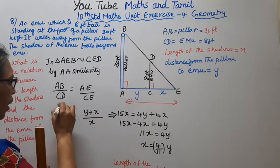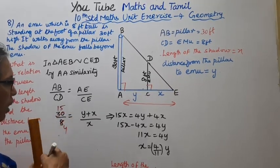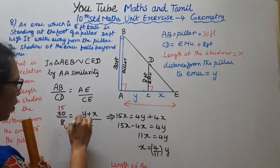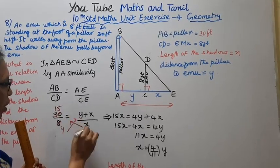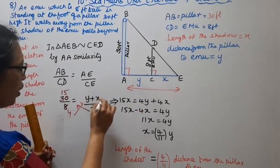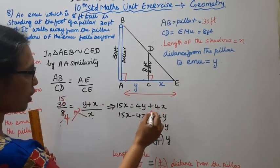Cancel. 2 times 15 is 30, 2 times 4 is 8. Aparam cross multiply pannikkla. 15 into X is 15X. 4 into Y plus 4 into X. 4Y plus 4X.